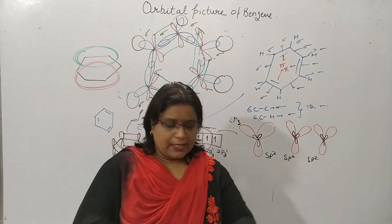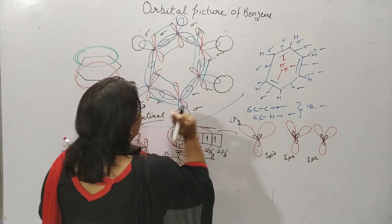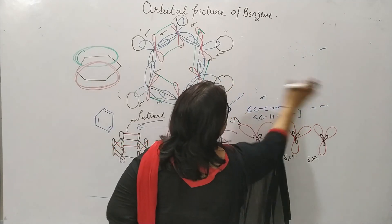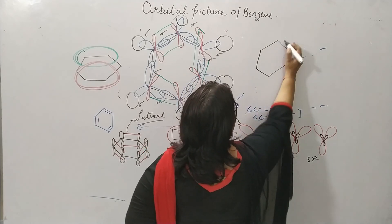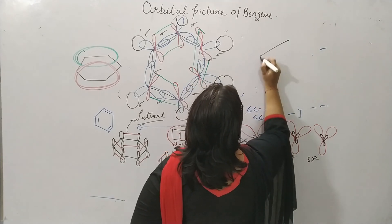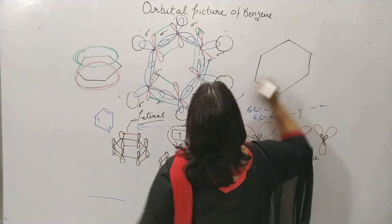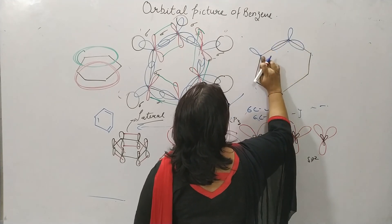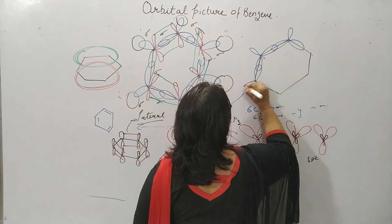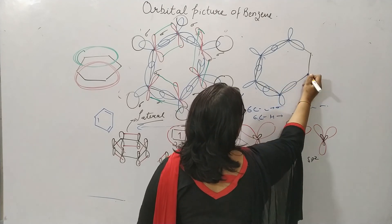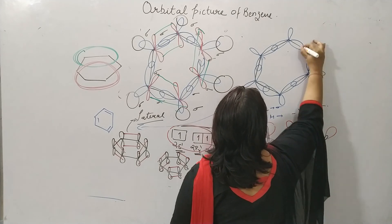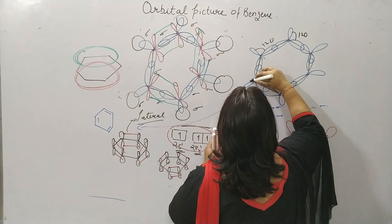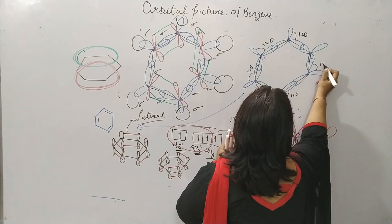One more thing to mention: the bond angle. The bond angle in the sp2 hybridized orbitals is 120 degrees. The bond angle of sp2-sp2 hybridization is 120 degrees.